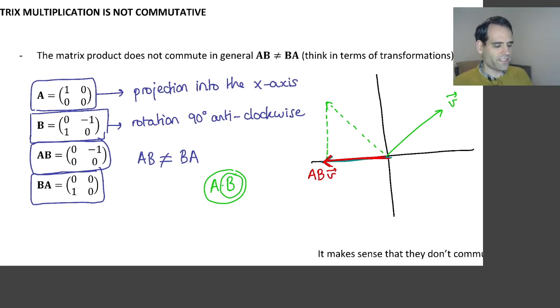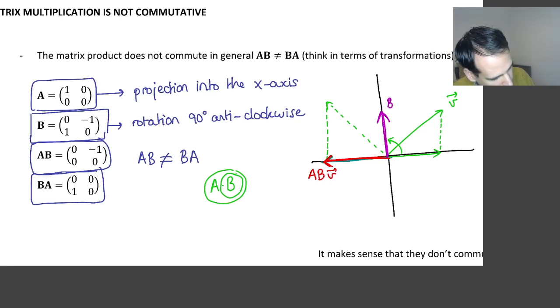However, if we start with the same vector V, and we do the transformation in the opposite order, so we first project vector V into the x-axis, so we end up with this vector here. And next we apply a transformation B, so we rotate this 90 degrees anticlockwise. So we end up with this vector here.